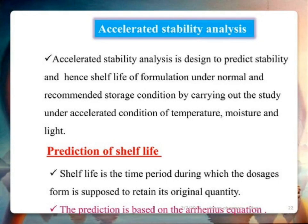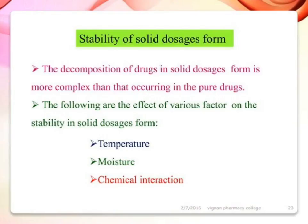Prediction of shelf life: shelf life is the time period during which the dosage form is supposed to retain its original quantity. The prediction is based on the Arrhenius equation. Stability of solid dosage forms: the decomposition of drugs in solid dosage forms is more complex than that occurring in the pure drug. Factors affecting stability in solid dosage forms include temperature, moisture, and chemical interactions.